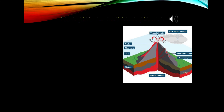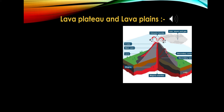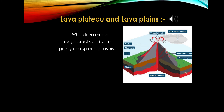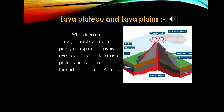Lava Plateau or Lava Plain: Besides volcanic mountains, there are also lava plateaus and lava plains. When lava erupts through cracks and vents gently and spreads in layers over vast areas of land, it creates volcanic plateaus or volcanic plains. An example of this is the Deccan Plateau.